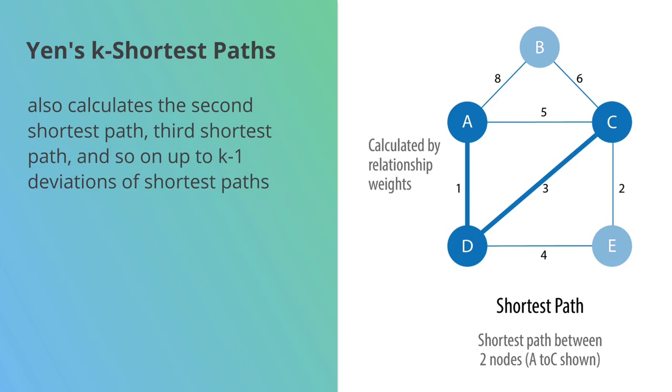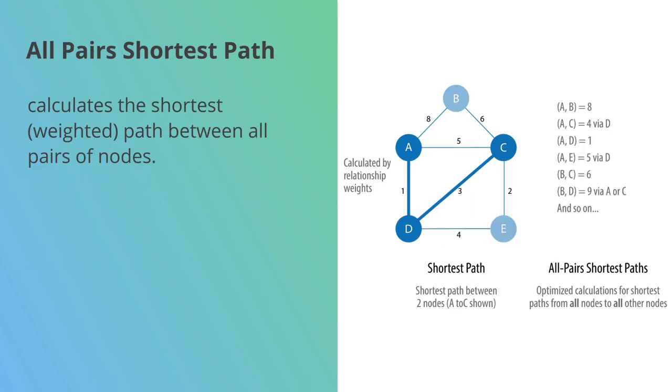All pairs shortest path is a different one. This time, rather than just finding the shortest path between two pairs of nodes, we want to find the shortest path between all pairs of nodes. Again, we can do weighted and unweighted variants.